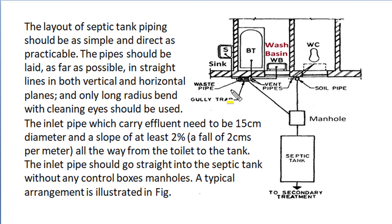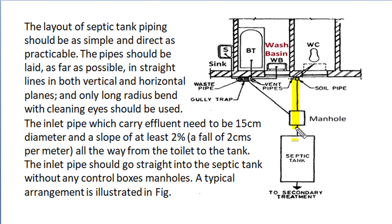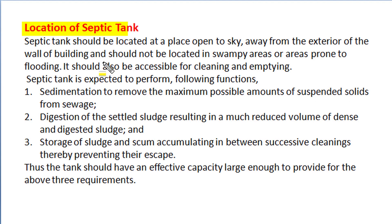The layout of septic tank pipe lining should be as simple and direct as practically possible. The pipe should be led as far as possible in straight lines both in vertical and horizontal planes, and if bends are required in pipe lining, only long-radius bends with cleaning eyes should be used. The inlet pipe which carries effluent needs to be at least 15 cm diameter, and the slope of the inlet line should have at least 2% gradient — that means a fall of 2 cm per meter is required all the way from the toilet to the tank. The inlet pipe should go straight into the septic tank without any control box or manhole. A typical arrangement of septic tank pipeline is from water closet, bathtub, wash basin and kitchen sink as shown.